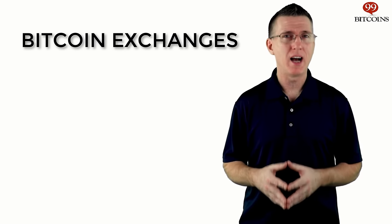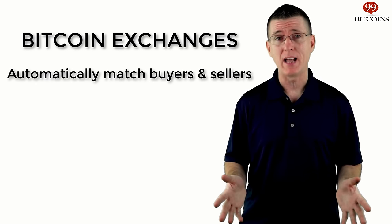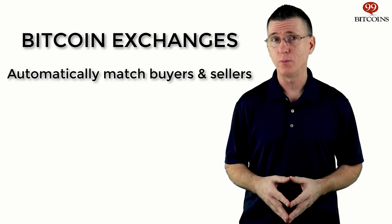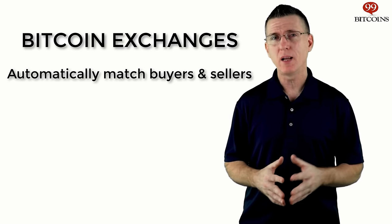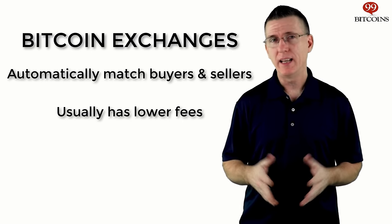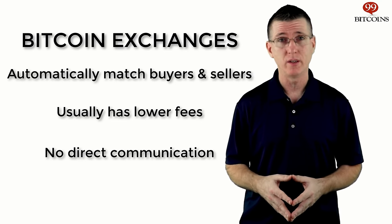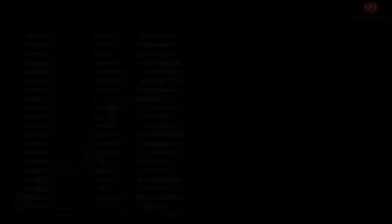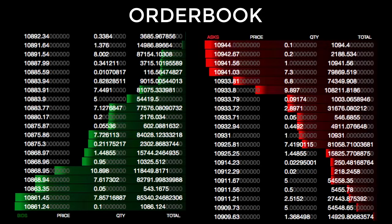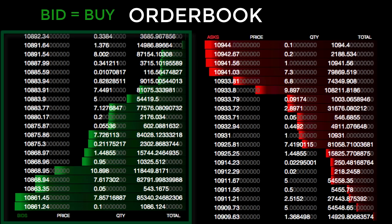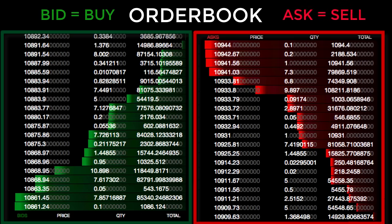Now let's break down some of the confusing terms and statistics you'll encounter on most exchanges. Bitcoin exchanges are online sites where buyers and sellers are automatically matched. An exchange is different from a Bitcoin company that sells you Bitcoin directly, such as CoinMama, which will usually charge a higher fee. An exchange is also different from a marketplace such as LocalBitcoins, where buyers and sellers directly communicate with each other to complete a trade. The complete list of buy and sell orders are listed in the market's order book. The buy orders are called bids, while the sell orders are called asks, showing the asking price that sellers request.